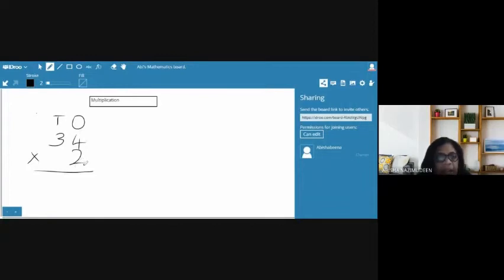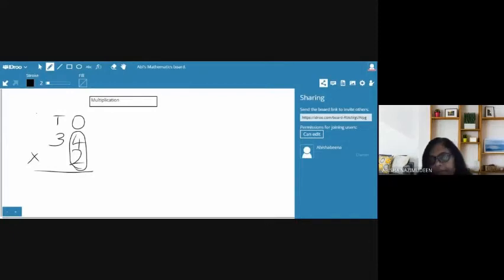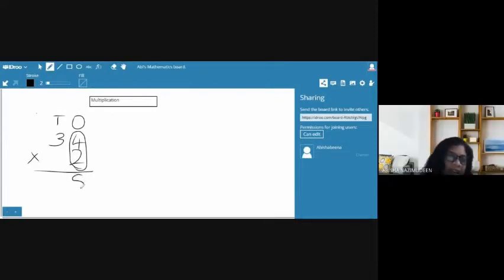This multiplier, we need to multiply with both the numbers and write the answer. The one's place number, we need to write in one's place. When you get the answer, you need to write it in the one's place. So, 2 is multiplied with 4. 2-4s are? Here, we need to use the multiplication table. 2-4s are? 2-4s are? 8. 8. Very good. So, we can write 8 here.